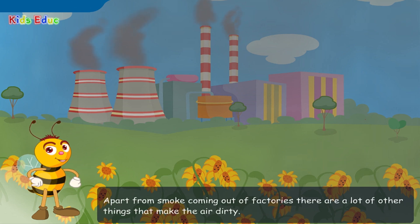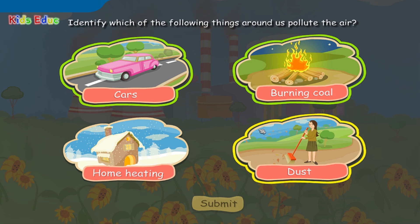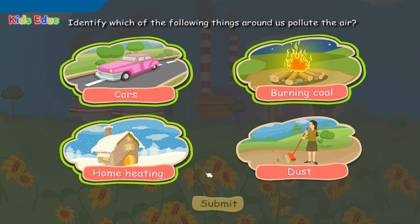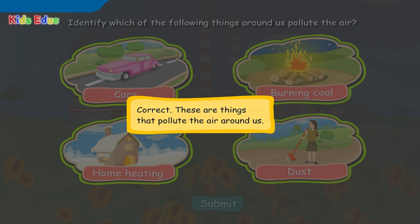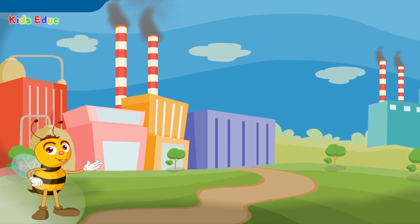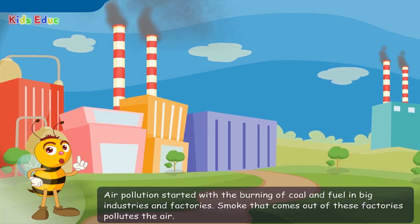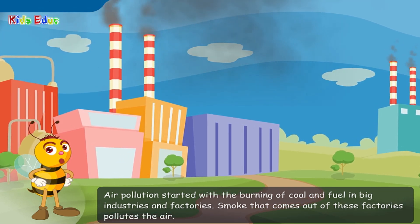Apart from smoke coming out of factories, there are a lot of other things that make the air dirty. Identify which of the following things around us pollute the air: cars, burning coal, home heating, dust. Air pollution started with the burning of coal and fuel in big industries and factories. Smoke that comes out of these factories pollutes the air.